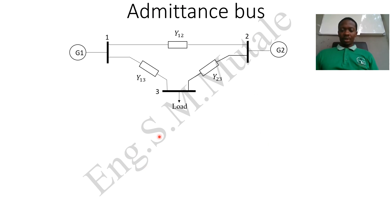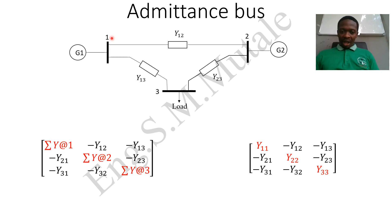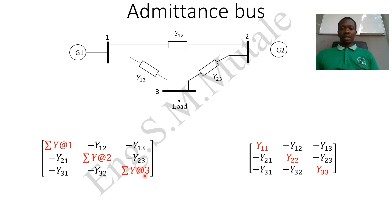To build the bus admittance matrix, the diagonal values are the summation of all admittances at a particular bus. Y11 is the sum of all admittances connected to bus one. Y22 is the sum of all admittances connected to bus two. Y33 is the sum of all admittances connected to bus three.